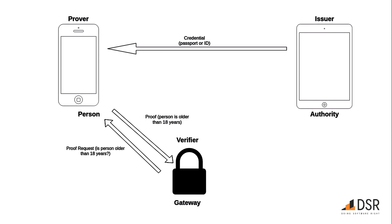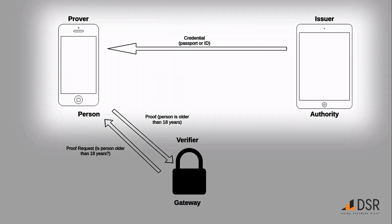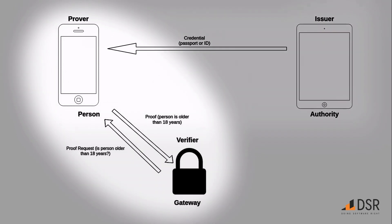Let's walk through the process with a simple use case. First, we have to start with credentials. Credentials are initially created by an authority, such as the government. The credential in this example consists of basic information such as a name and birth date — think of it as a license or passport. Upon issuance, this credential is signed by the authority using a key that is rooted on the blockchain.